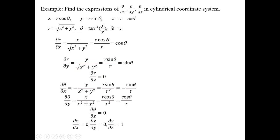For ∂θ/∂x: since θ = tan⁻¹(y/x), differentiating gives −y/(x² + y²) = −sin θ / r. And ∂θ/∂y = cos θ / r, while ∂θ/∂z = 0. The z-derivatives with respect to x and y are zero, and ∂z/∂z = 1.